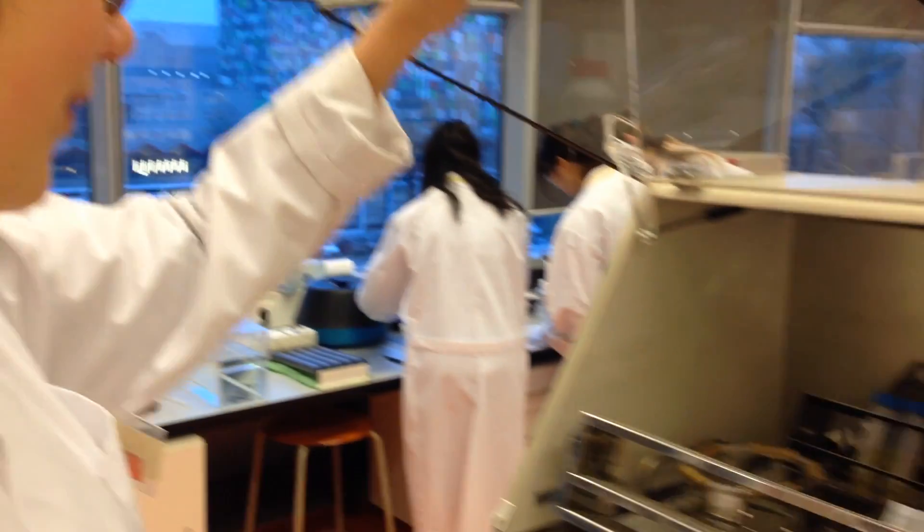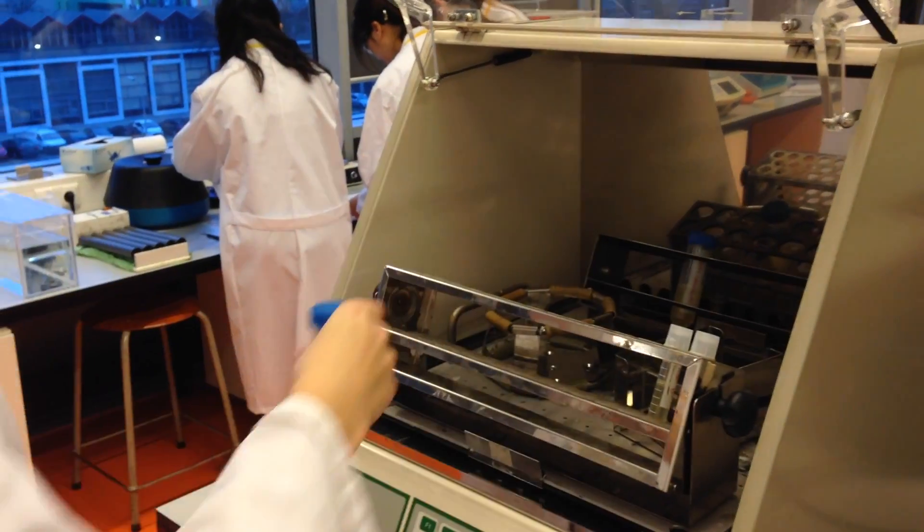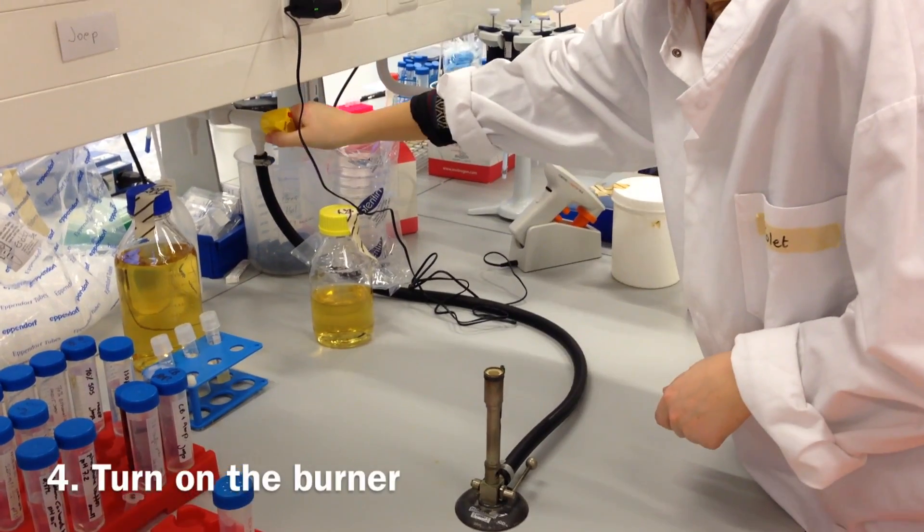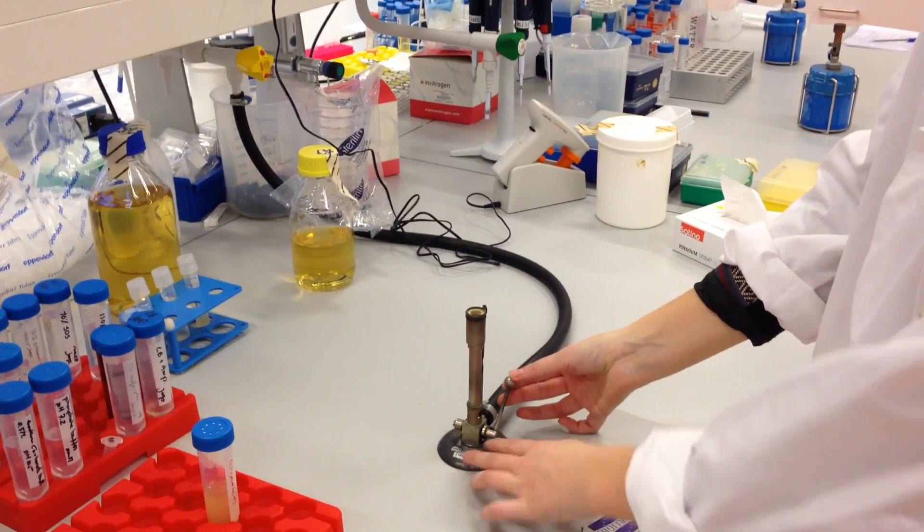The first thing you have to do is to remove the pre-incubated cells from the cell incubator. When you are not using the cells, they should be put back into the incubator to enable optimal growth. Before working with the cells, turn on the Bunsen burner to create a sterile environment.